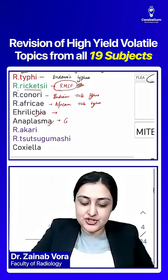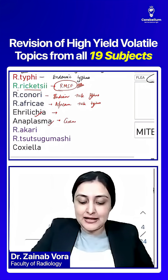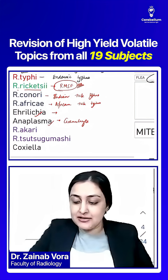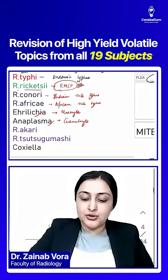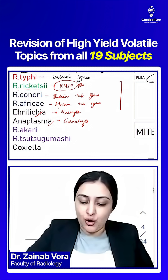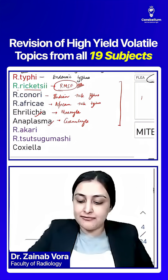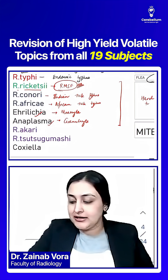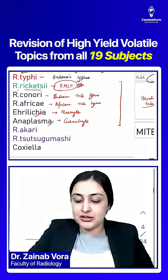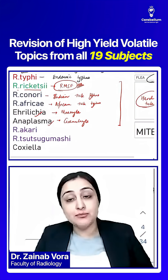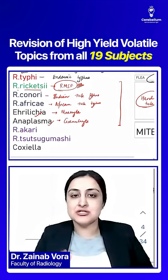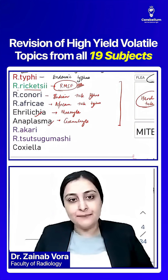In the GAME mnemonic: G stands for Granulocytes affected in Anaplasmosis, and M stands for Monocytes affected in Ehrlichiosis. The vector for all of these is hard tick. One more hard tick disease is Lyme disease, which we've already seen.